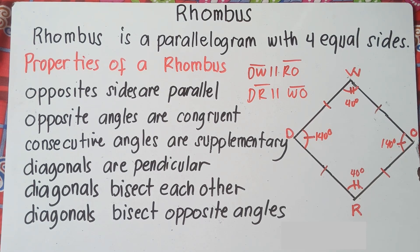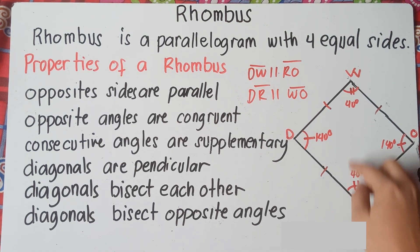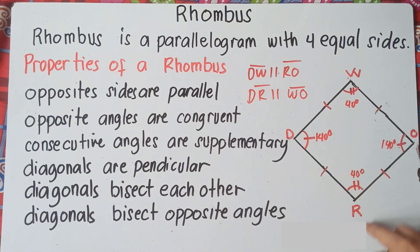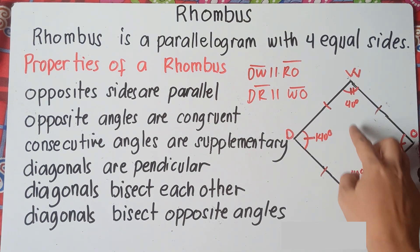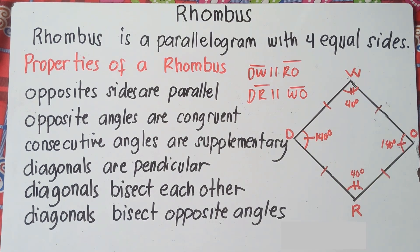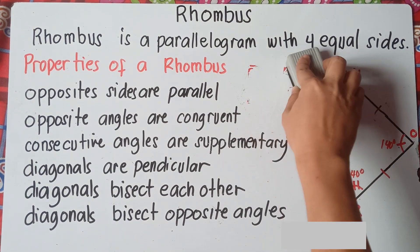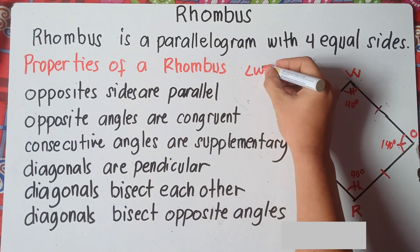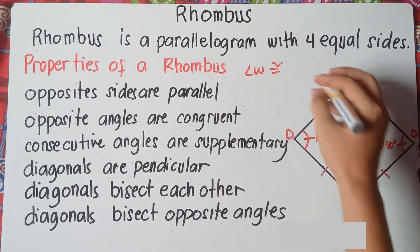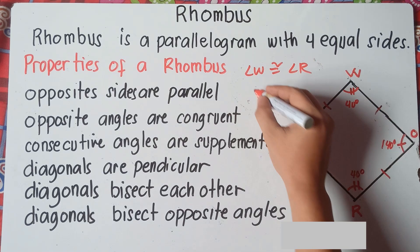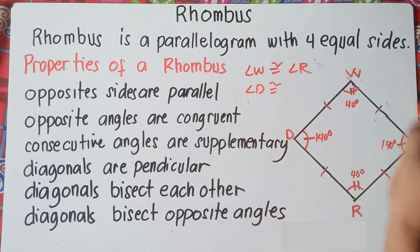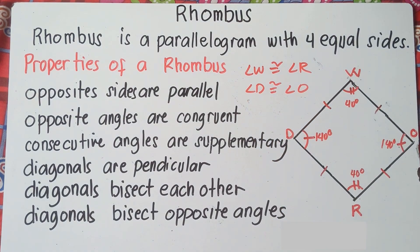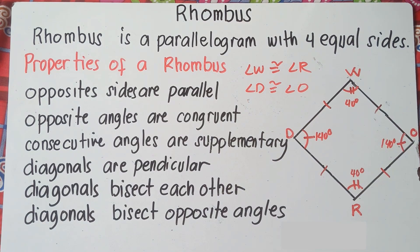So opposite angles are congruent. Just as an example: angle W is 40 degrees, so of course angle R must be 40 degrees. We can write it as: angle W is congruent to angle R, and angle D is congruent to angle O. That's the second property of a rhombus.